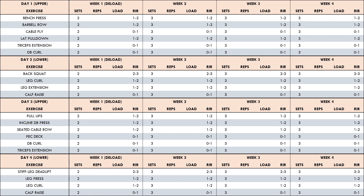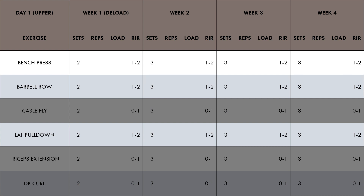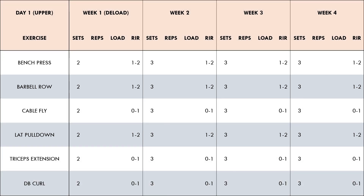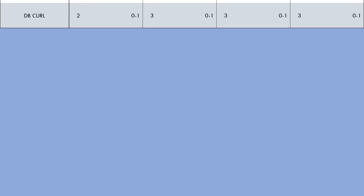Looking in detail at day one — an upper body session — the compound lifts (bench press, barbell row, and lat pulldown) have been prescribed with an RIR of 1-2, because they are slightly more fatiguing and will likely be trained in slightly lower rep ranges. The isolation lifts (cable fly, dumbbell curl, and tricep extensions) have been prescribed at an RIR of 0-1, because they are less fatiguing and will likely be trained in higher rep ranges.